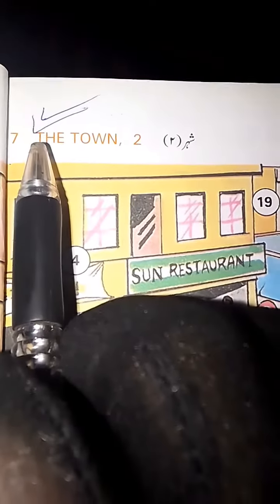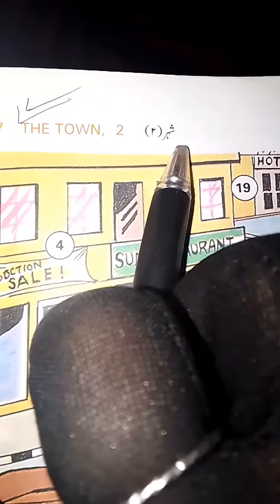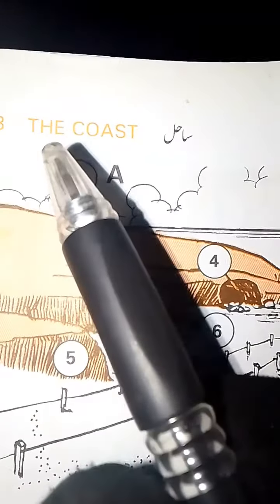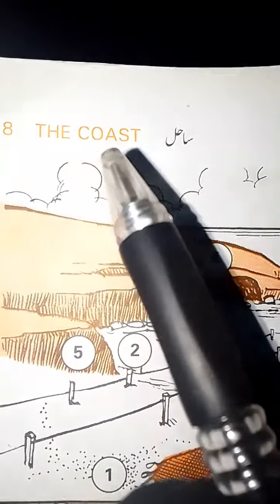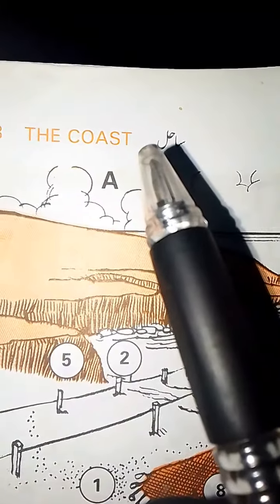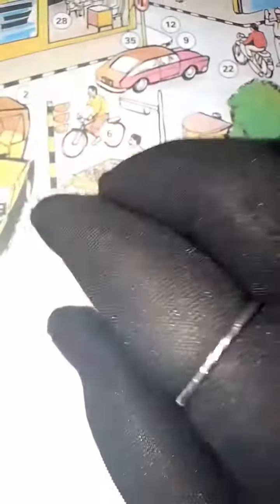Ok friends, today we have completed our seventh topic — the town, Sheher, part 2. Tomorrow we will learn the coast — Sahel. See you in the next class, bye.